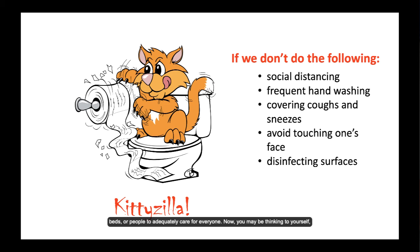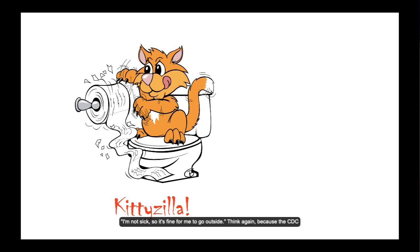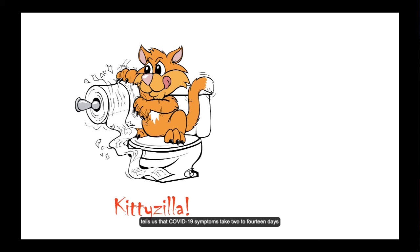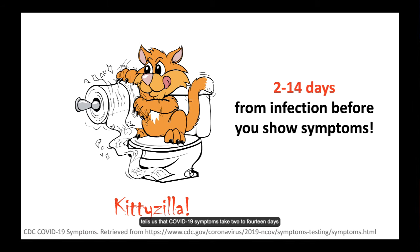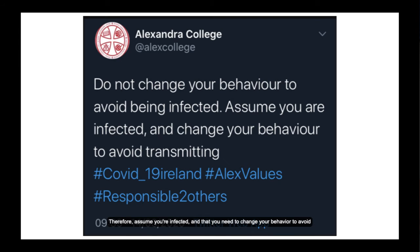You may be thinking to yourself, I'm not sick, so it's fine for me to go outside. Think again, because the CDC tells us that COVID-19 symptoms take 2 to 14 days to show up — 2 to 14 days! That means you can be a walking petri dish, freely infecting everyone for a while before you even know that you're sick. Therefore, assume you're infected and that you need to change your behavior to avoid transmitting to others.